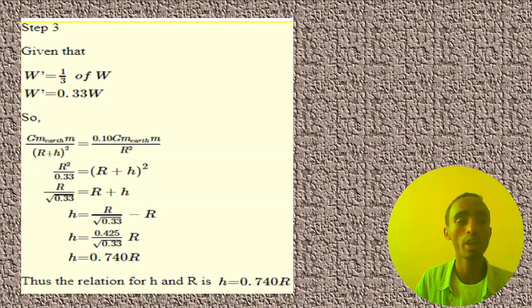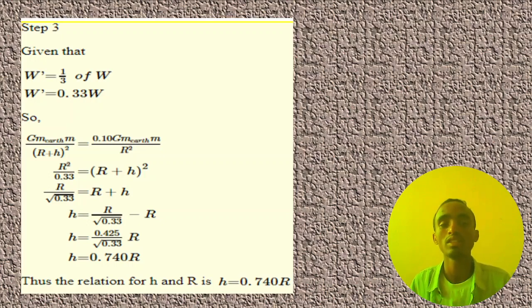Therefore, the weight of an object or person above the north pole is reduced by one over three at the height of 0.740R.